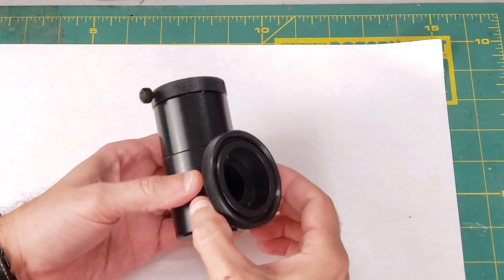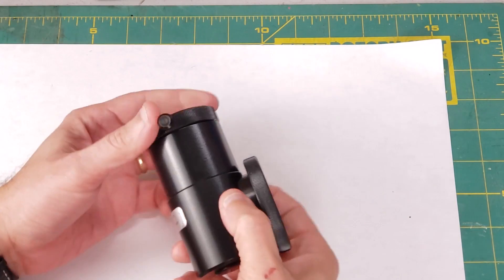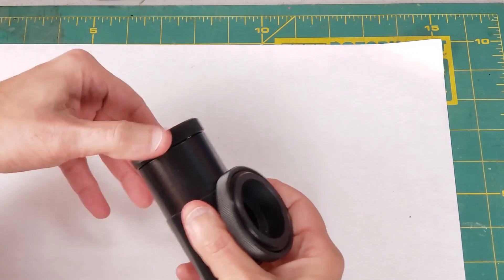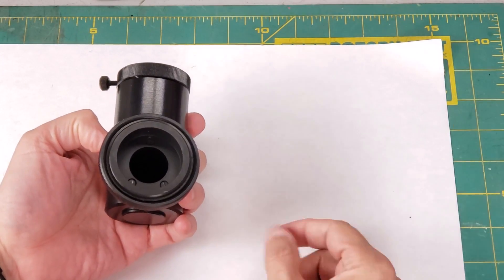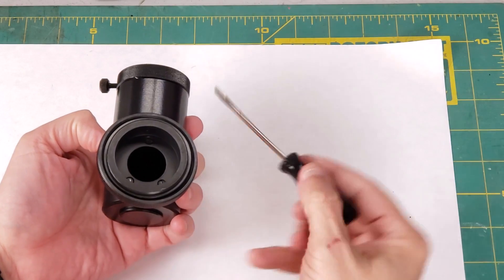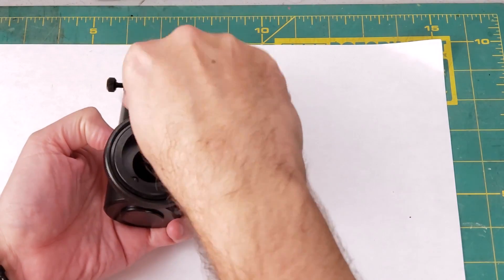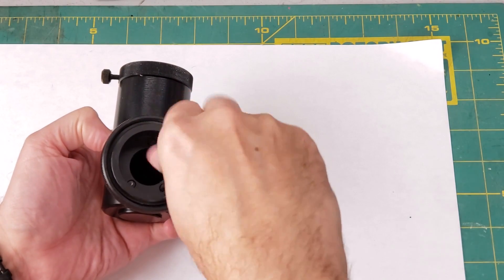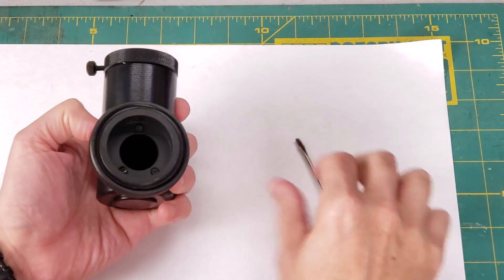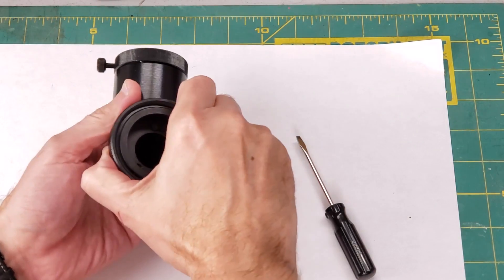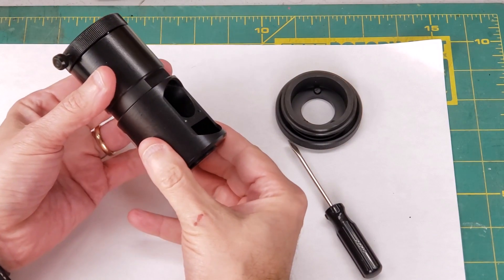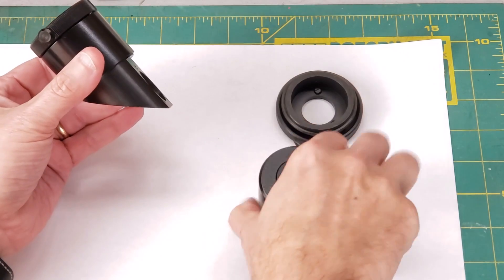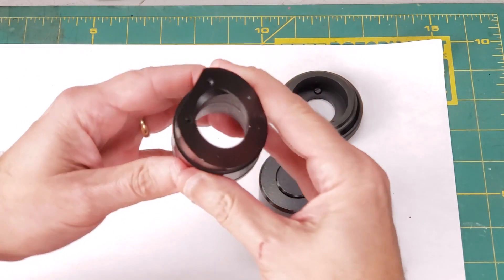All right, here we are on the workbench. Here's that focuser tube. It's actually a helical focuser and here's a loose ring that attaches to the telescope, all held together with these three screws. Let's go ahead and start taking these apart. There we go. This comes apart and it will reveal the mirror sitting right... Wait a minute. Where'd the mirror go?